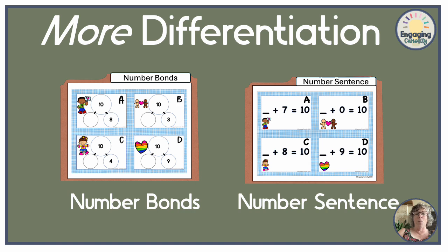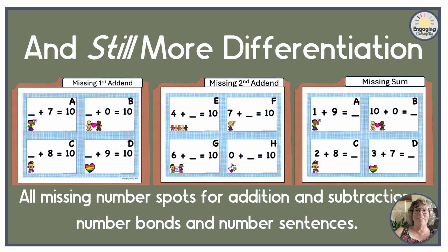And they come with number bonds or number sentences when you buy the bundle. There are three in the bundle: the missing first addend, missing second addend, and missing sum.